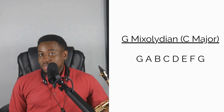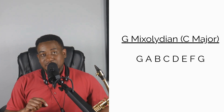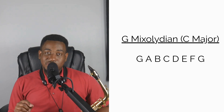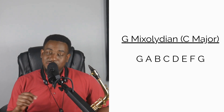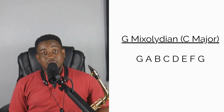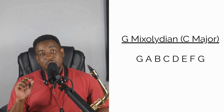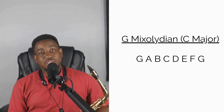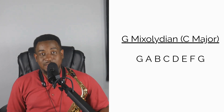The next mode is G Mixolydian. The Mixolydian mode is the fifth mode of the major scale, and G is the fifth scale degree of C major — we already learned that one. So you have G A B C D E F G.